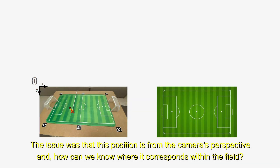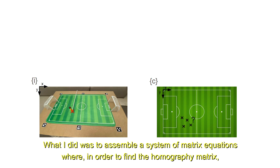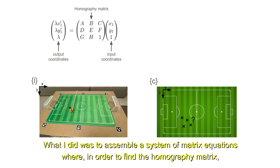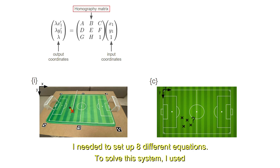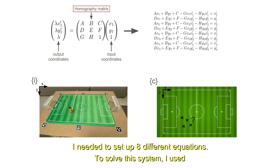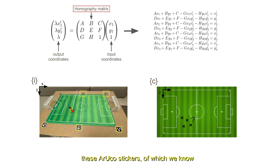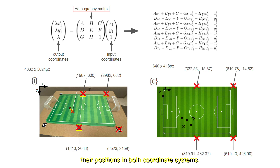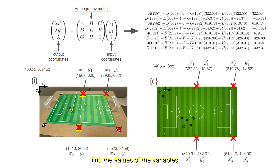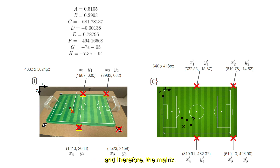The issue was that this position is from the camera's perspective, and how can we know where it corresponds within the field? What I did was to assemble a system of matrix equations where, in order to find a homography matrix, I needed to set up 8 different equations. To solve this system, I used these Aruko stickers, of which we know their positions in both coordinate systems. With this information, I was able to find the values of the variables, and therefore, the matrix.